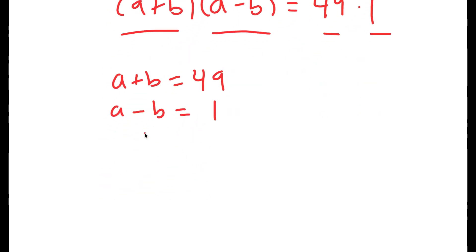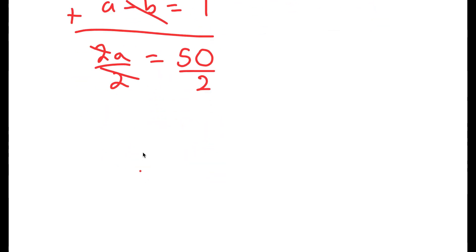So what we have here is a system of equations and I'm going to add these equations. a plus a is 2a, b and negative b cancel out, and 49 plus 1 is 50. So I get that 2a equals 50. And if I divide both sides by 2, I get a equals 25.